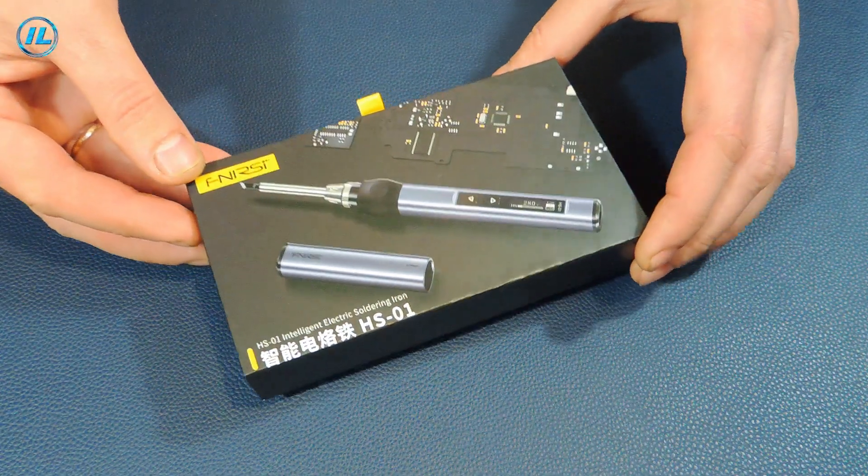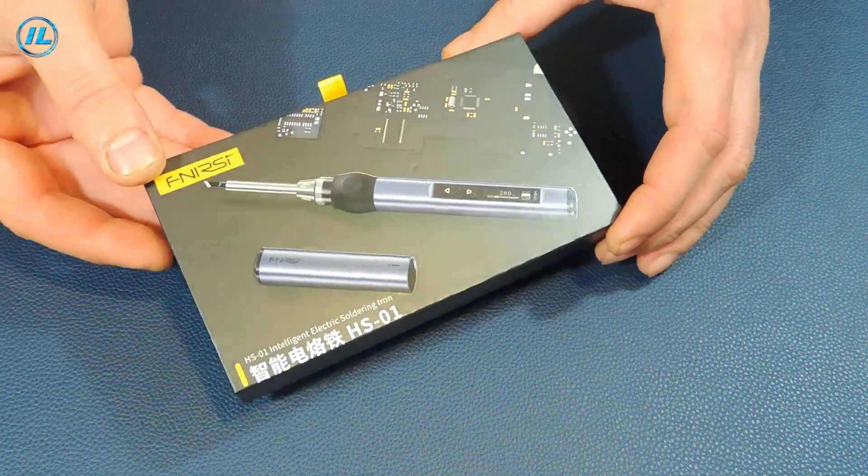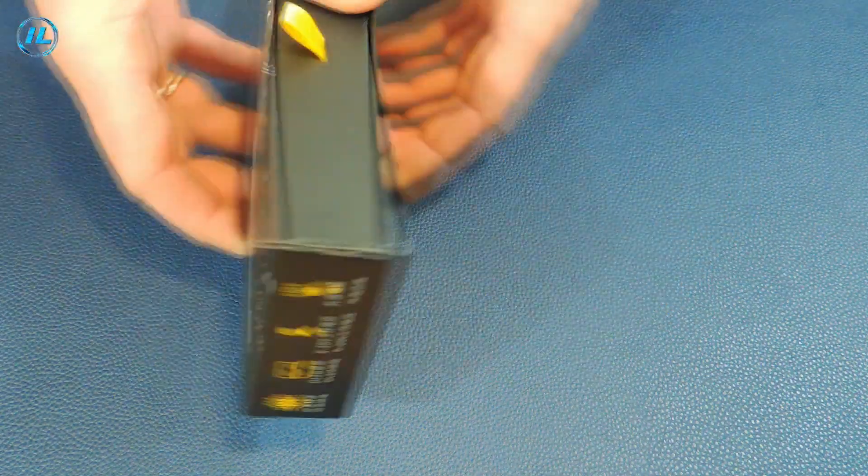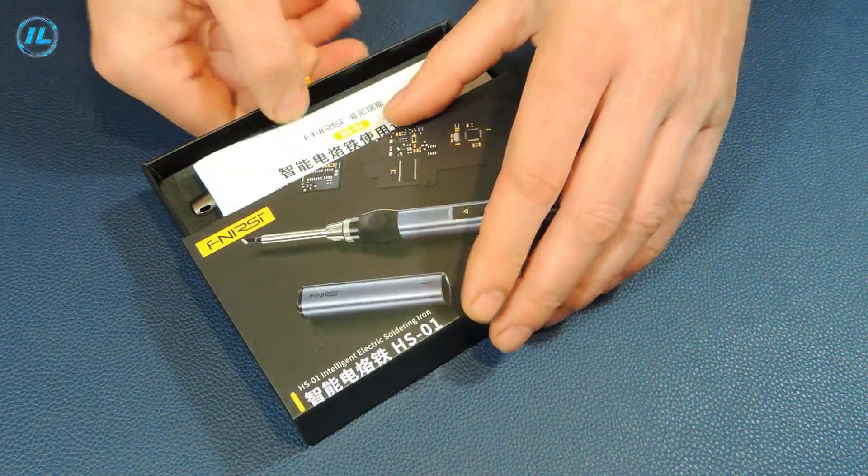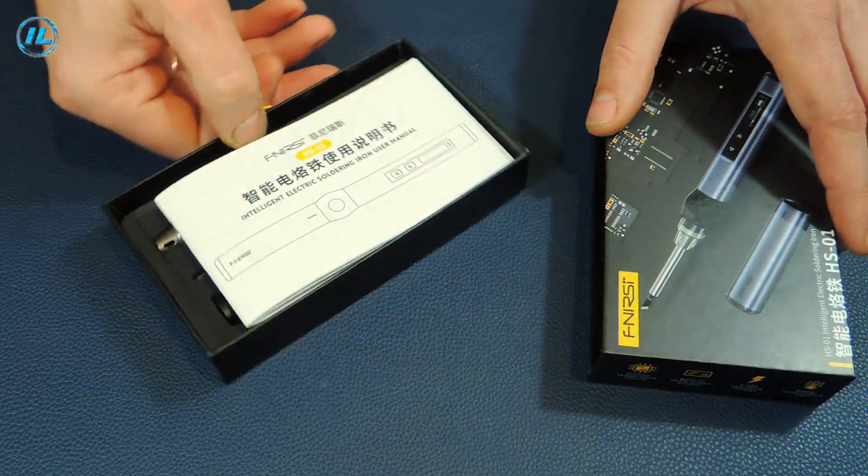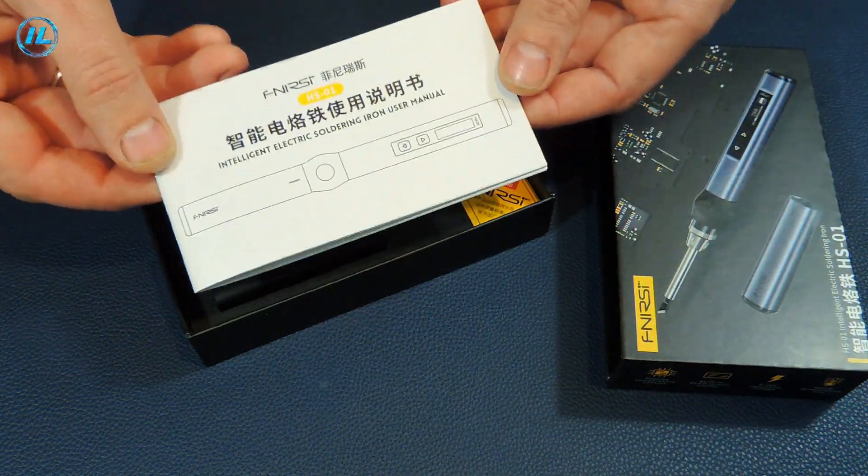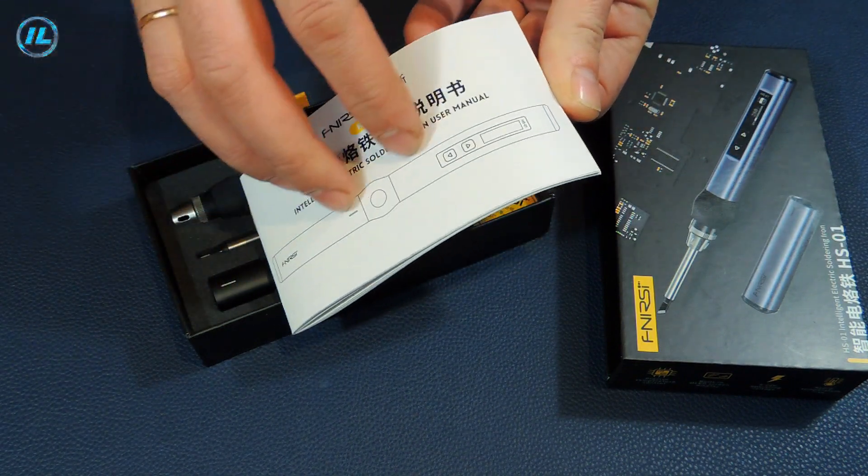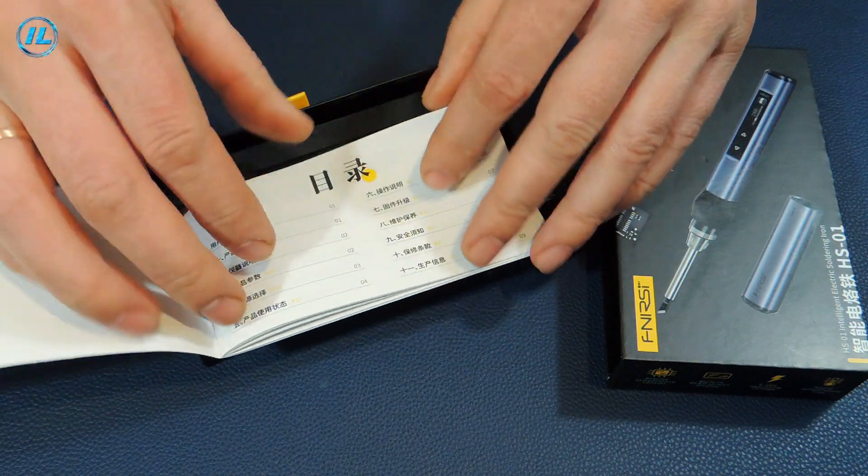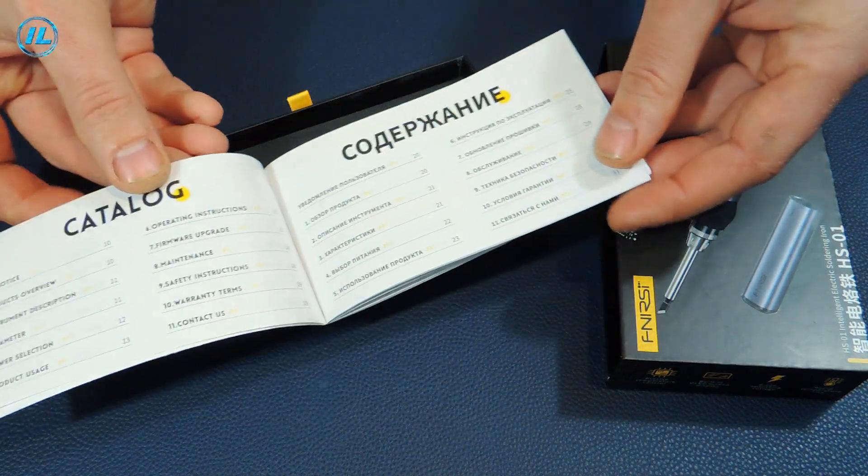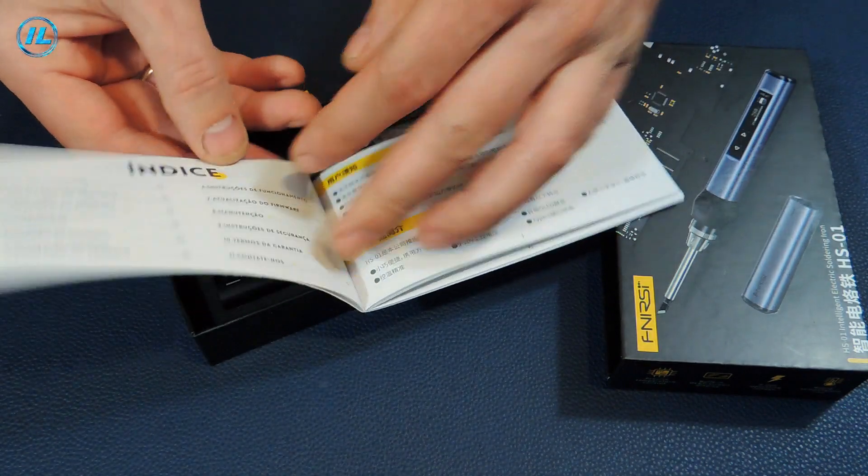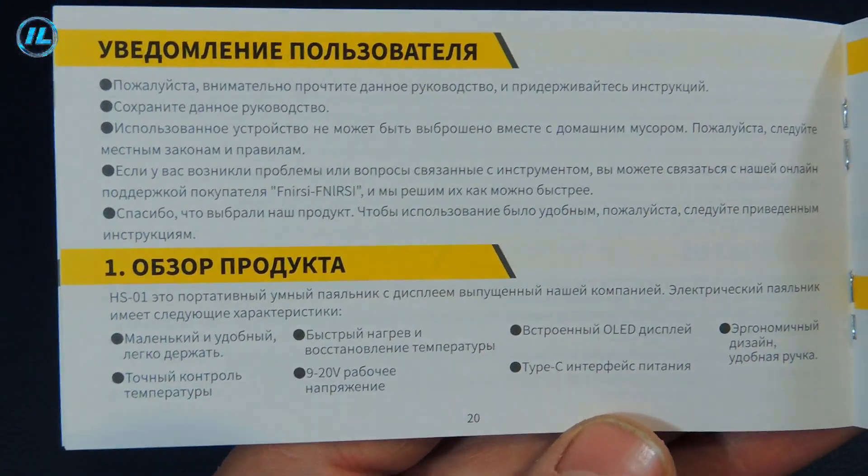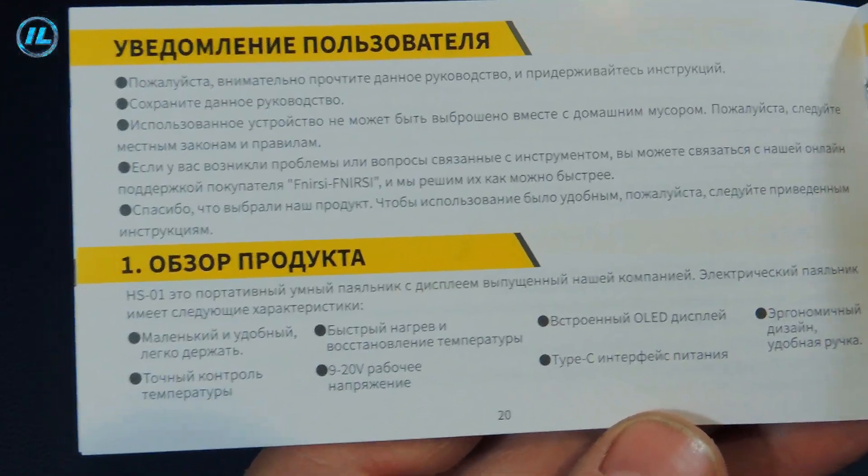This soldering iron comes in such a compact branded box. The soldering iron is accompanied by an instruction with a detailed description and characteristics. Instructions in four languages: Chinese, English, Russian and Spanish.